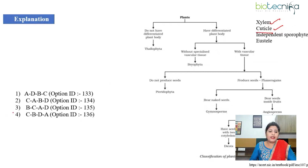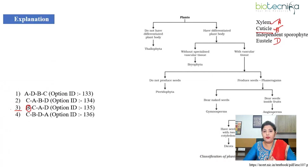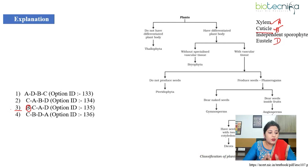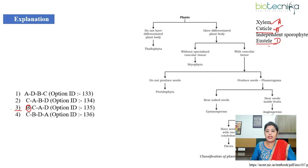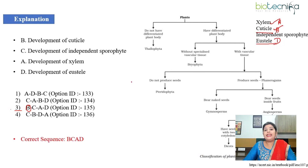So if cuticle is B, then xylem is A, independent sporophyte is C, and eustele is D. Independent sporophytes are the dominant forms in all club mosses, horsetails, ferns, gymnosperms and angiosperms. Eustele is mostly found in seed plants such as gymnosperms and angiosperms, so it must be last in the evolutionary sequence. That means the order should be B, C, A, D — confirming the answer is option 3.